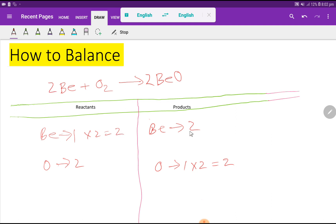Now, beryllium 2, beryllium 2, oxygen 2, oxygen 2. Everything is balanced. You can say that this is the balanced reaction.